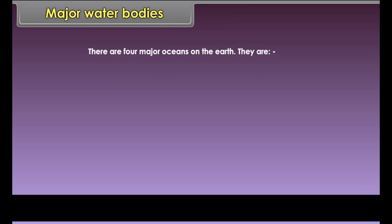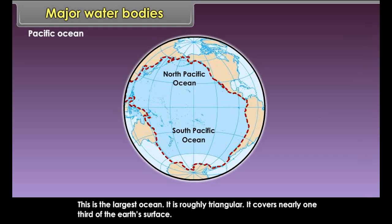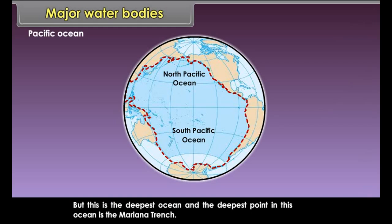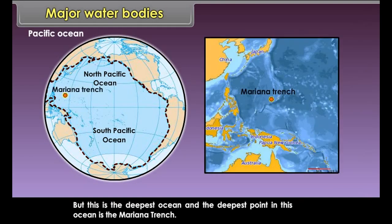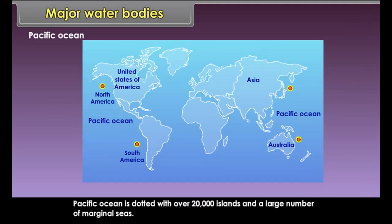In cold polar areas where the rate of evaporation is low, the salinity is also very low — for example, the Baltic Sea. There are four major oceans on the Earth: Pacific Ocean, Atlantic Ocean, Indian Ocean, and Arctic Ocean. The Pacific Ocean is the largest ocean. It is roughly triangular, covers nearly one third of the Earth's surface, and has an average depth of 4572 meters. It is also the deepest ocean, with the deepest point being the Mariana Trench. This ocean is bordered by North America and South America on the east, and Asia and Australia on the west. The Pacific Ocean is dotted with over 20,000 islands and a large number of marginal seas.